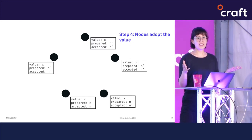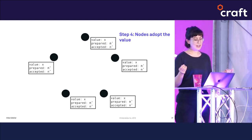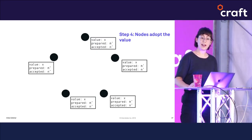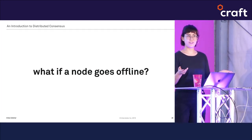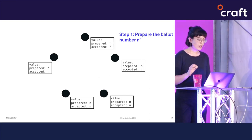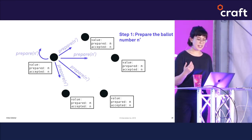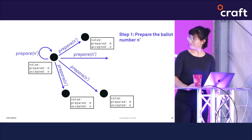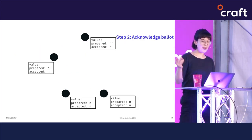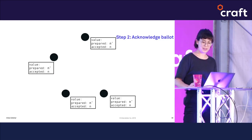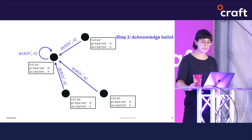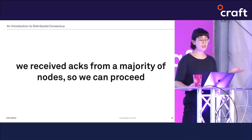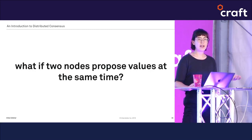This multi-stage consensus process may seem complicated, but now let's see how some failure scenarios play out. If a proposing node sends out its prepare statement but another node goes offline before it can respond, all the remaining nodes can still send their acknowledgments back. When the proposer counts them, it will see it has responses from a quorum of nodes and can proceed to finish the round.